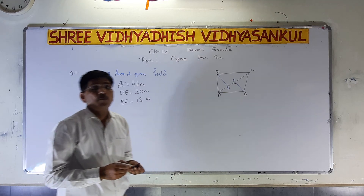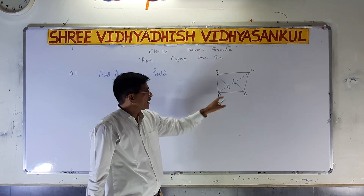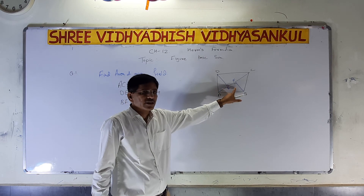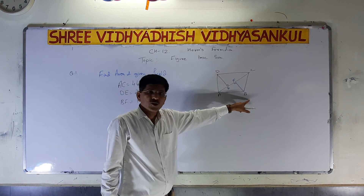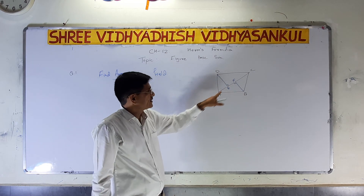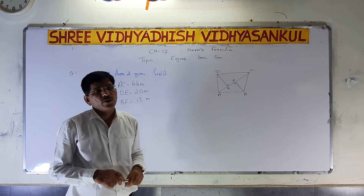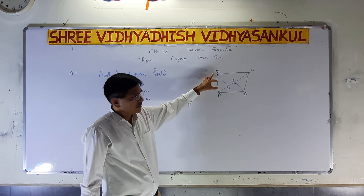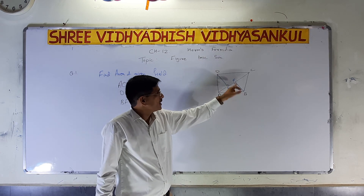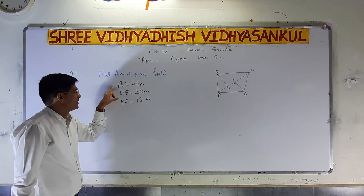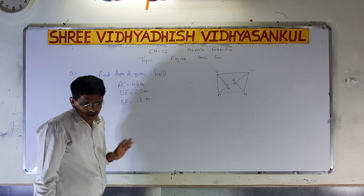I repeat: these are perpendiculars — only perpendiculars. Perpendicular means from here and here. D is a vertex, B is also a vertex. AC is a diagonal. On the diagonal AC, two perpendicular lines, DE and BF, are drawn. So AC is given, DE is given, and BF is given.